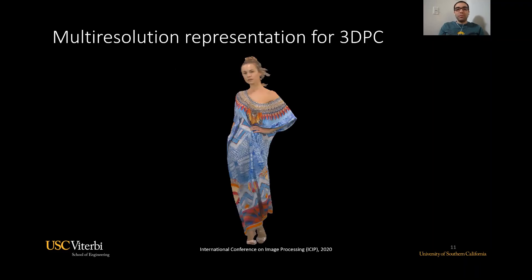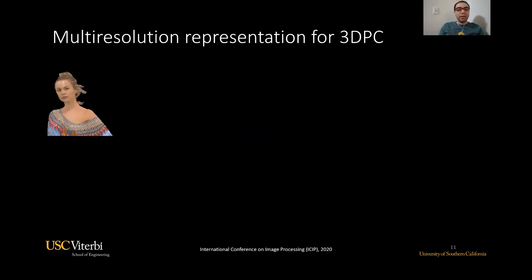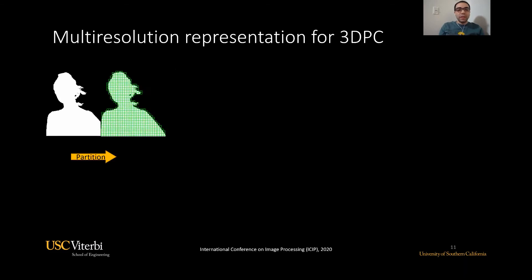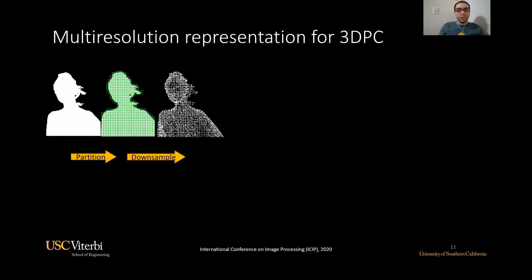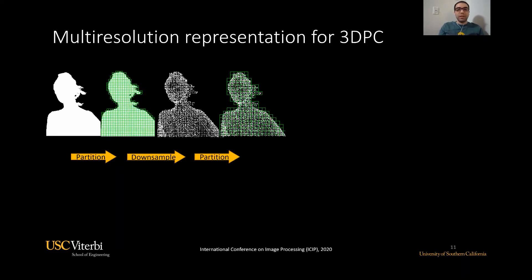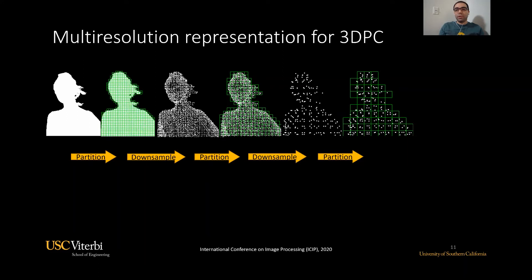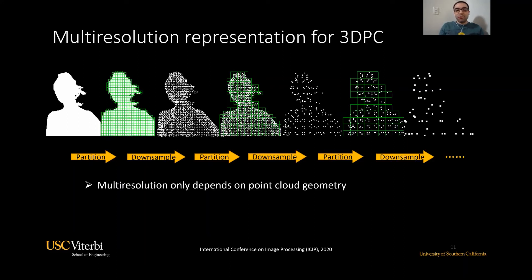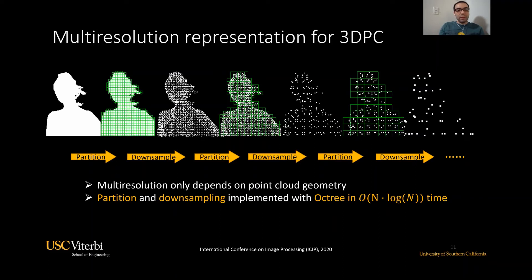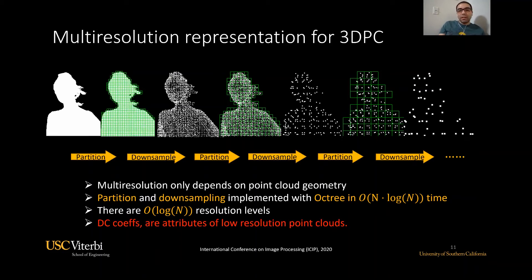The multiresolution representation for point clouds can be obtained very easily. We start with an arbitrary point cloud and look at just a region to make things easier to understand — we only look at the geometry, not the colors. We start by partitioning the point cloud, as with the block GFT. Then for each block, we can choose one point and do a downsampling, obtaining a lower resolution point cloud. This process can be repeated to obtain lower and lower resolution point clouds. The partitioning and downsampling can be implemented by exploiting the octree structure in O(n log n) time, and there are at most log n resolution levels.